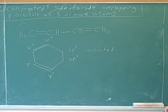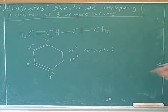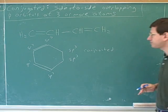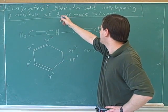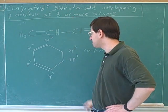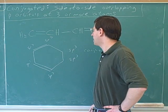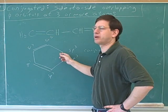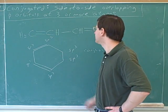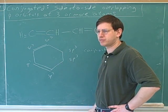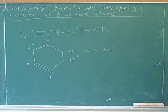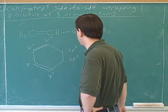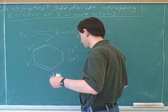When you study Hückel's rule next term, you'll get into more complications. But for this term, we're just going to focus on: conjugated means side-to-side overlap at three or more atoms. It's okay if there are other atoms that are not part of the conjugated system. So this is conjugated. It's good that you saw that these would be SP3 hybridized.